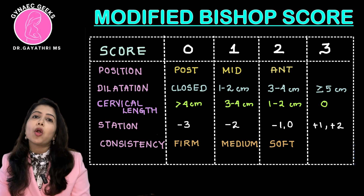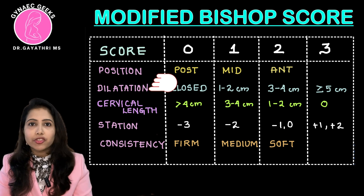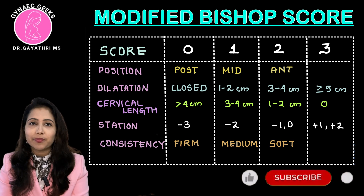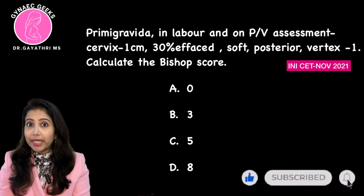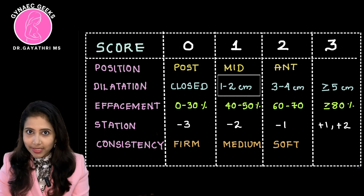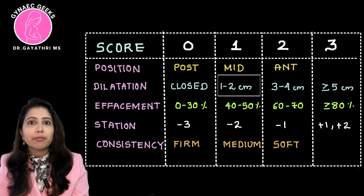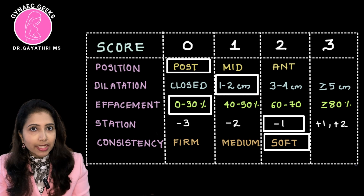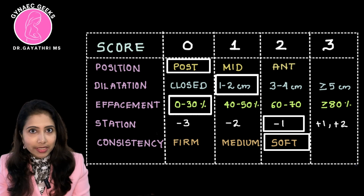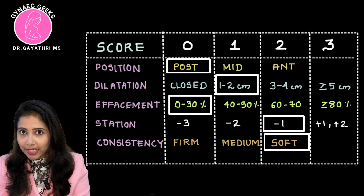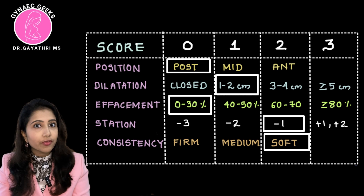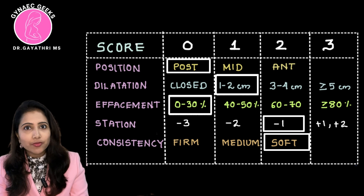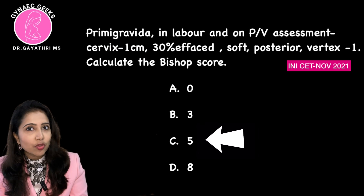Among all parameters, the most important is cervical dilation. Now for the second question: dilation was 1 cm (score 1), 30% effaced (score 0), vertex at minus 1 (score 2), soft consistency (score 2), and posterior position (score 0). Total: 0 + 1 + 0 + 2 + 2 = 5. So the total Bishop's Score is 5.